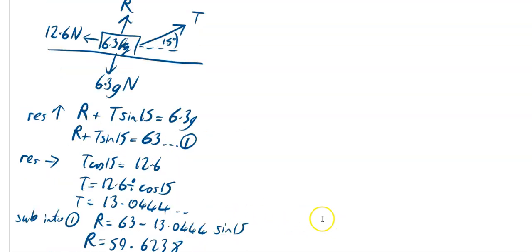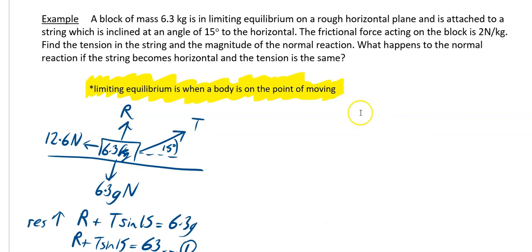I am going to go back up and look at the question again. It says find the tension in the string and the magnitude of normal reaction, done that, and then it says what happens to the normal reaction if the string becomes horizontal and the tension is the same. So we are going to use the same tension as before. New diagram here, tension stays the same, I will try and make that horizontal.